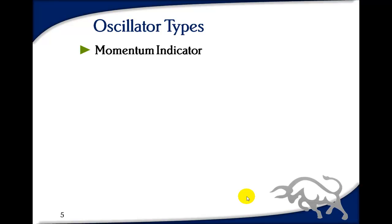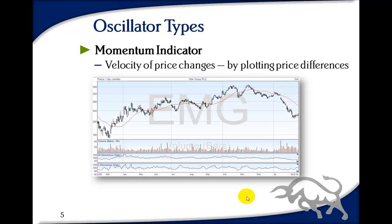The first oscillator we're looking at is a simple momentum indicator, which measures the velocity of price change — how fast the price is changing — by plotting the price differences between the current price and the price from a few days ago. Here I've got a 20-day momentum indicator and a five-day momentum indicator: one plots the difference between today and 20 days ago, the other between today and five days ago. You can see the five-day has a lot more up and down — a lot more volatility.